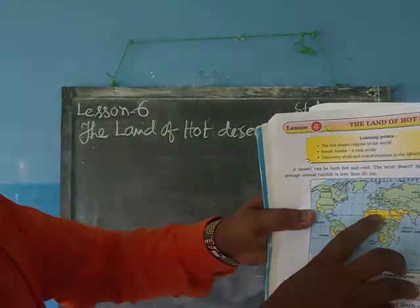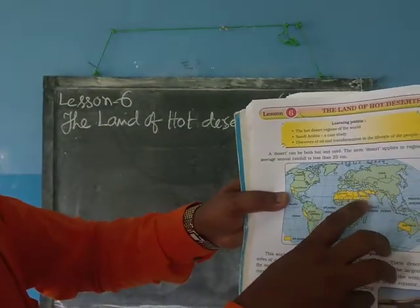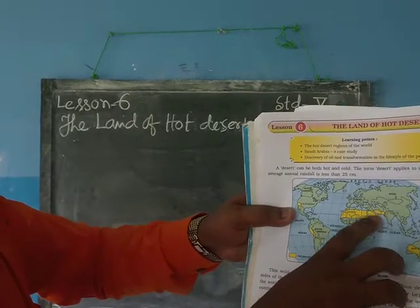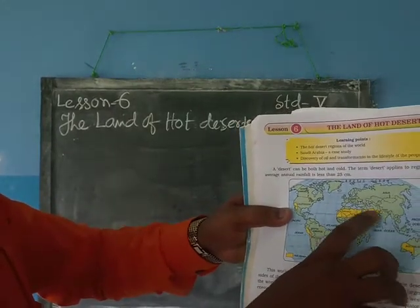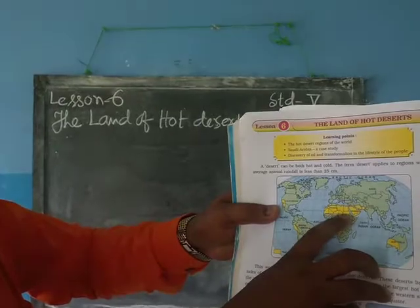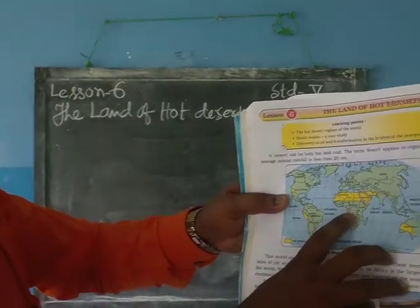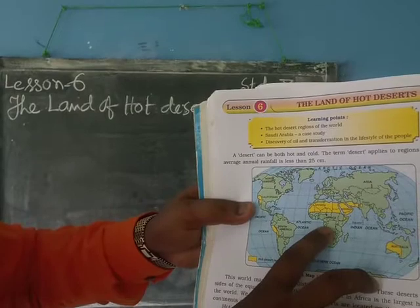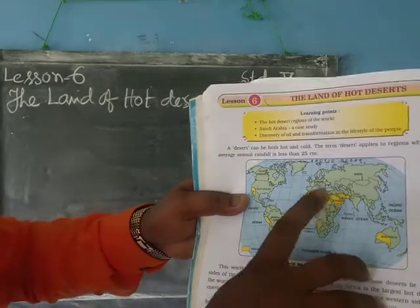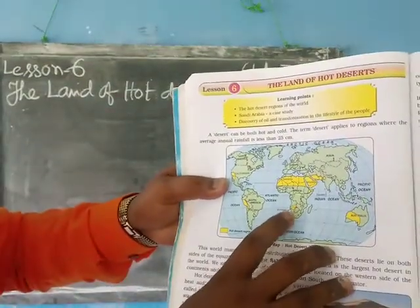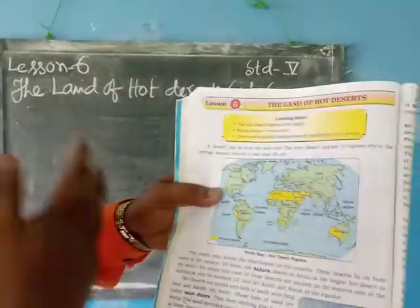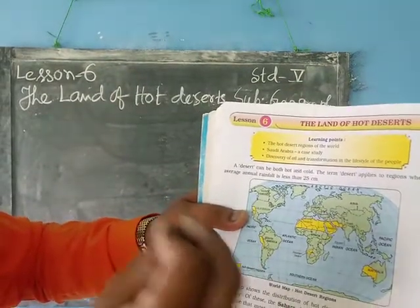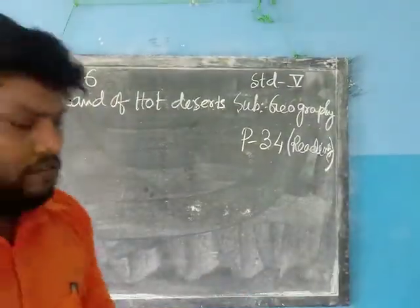This is Sahara, and this is Saudi Arabian. These regions belong to Africa continent. And in the previous classes we have discussed the Asia continent.